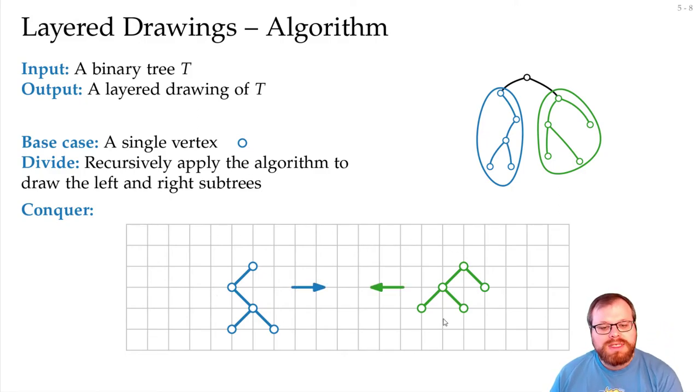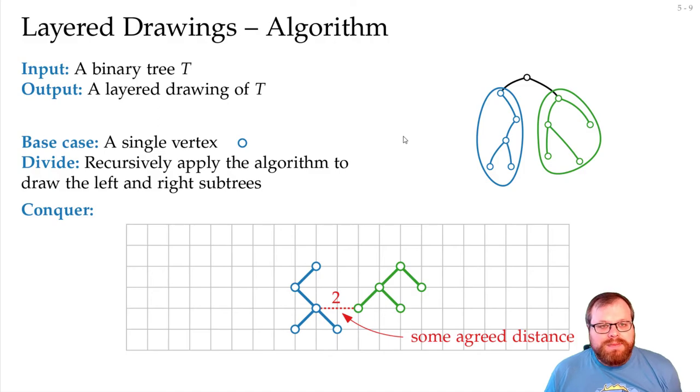To do this, we want to put them as close together as possible, because our drawing aesthetic we want to minimize is the area. How close can we put them? That's the big question. So, we have to agree to some minimum distance that we want to have between the trees. Here, we will say this should be a 2.